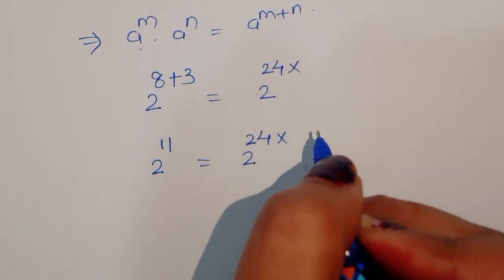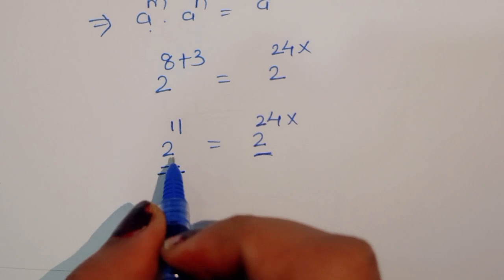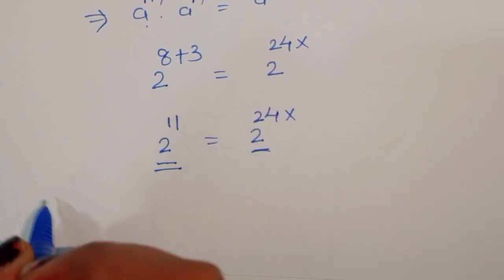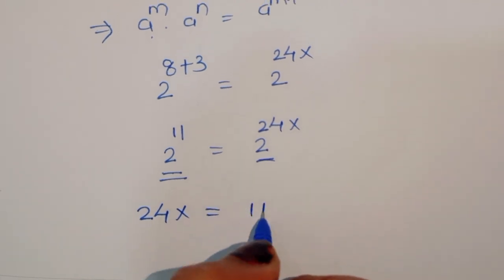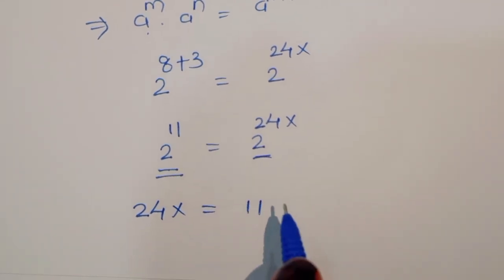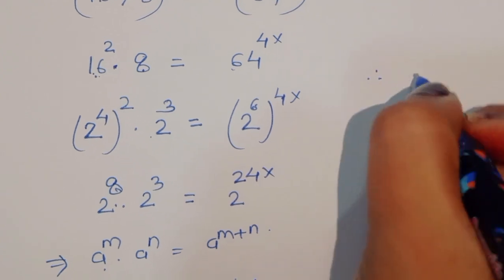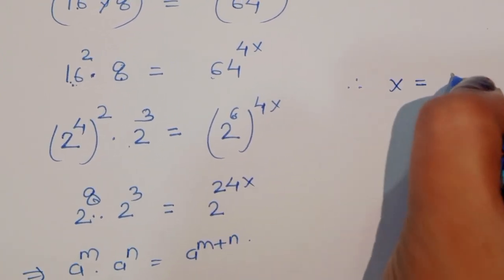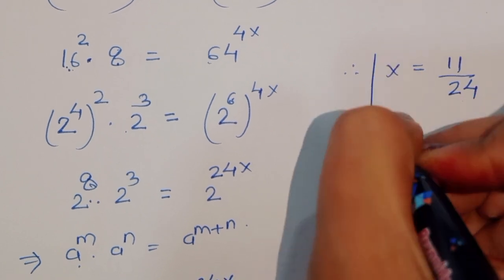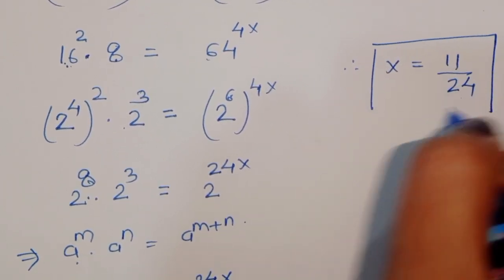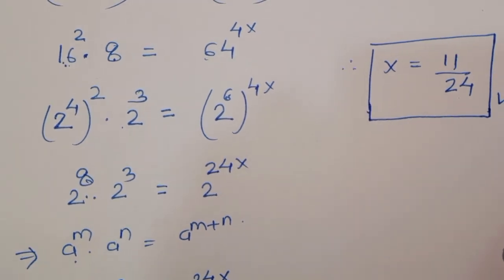Since the bases are the same, we compare powers: 24x = 11, therefore x = 11/24. This is the same solution we got in the first method.